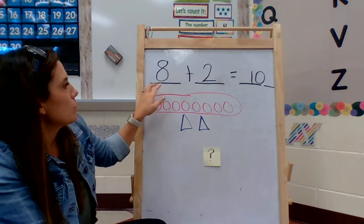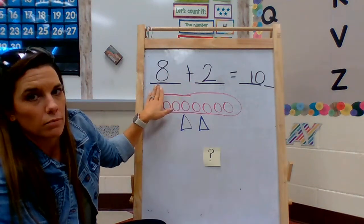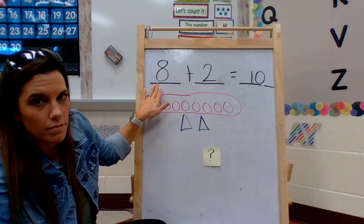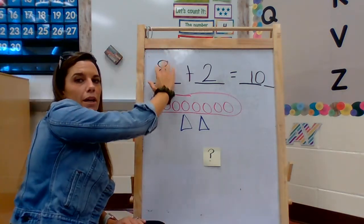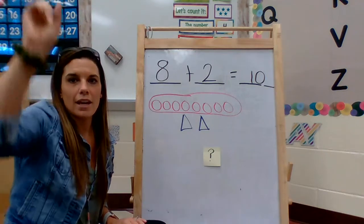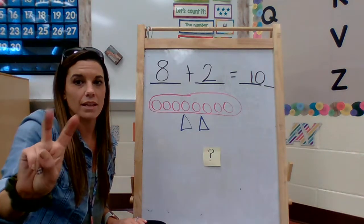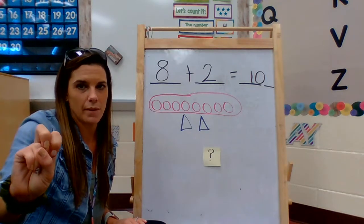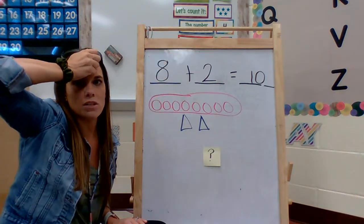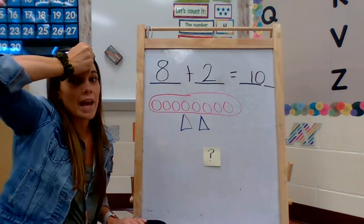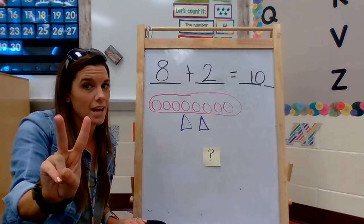So, between the numbers 8 and 2, which one's bigger? It's the number 8. So, I'm going to put that in my head. That's why I do this. I'm going to take the 8. I'm going to put it in my head. 8, 9, 10. And then I only counted by 2. Do you see how I did that? You take that bigger number, put it in your head, and that's where you start at. 8, 9, 10.